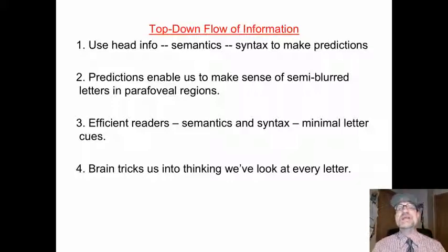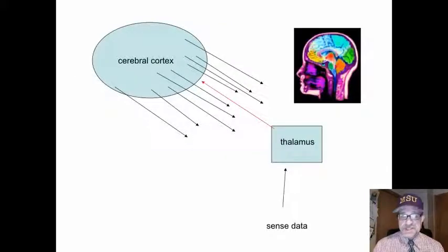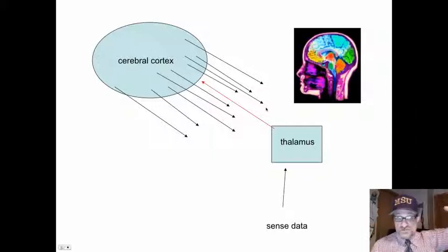The brain tricks us into thinking that we're looking at every individual letter when we do not. The brain tricks us into thinking we have looked at every individual word when we read 60% of the words at best. Again, here's that idea that ten times more information is flowing from the cerebral cortex down to the thalamus.